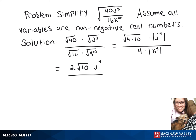And then all of that is over 4 times k to the 5th. We can take those out of the absolute value because we know that the variables are non-negative real numbers. So here is our final answer.